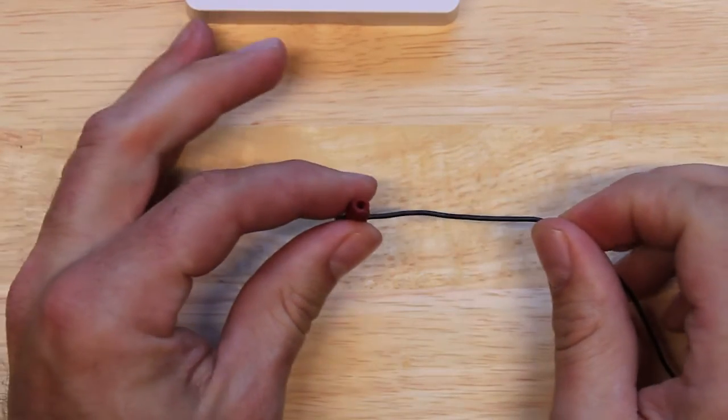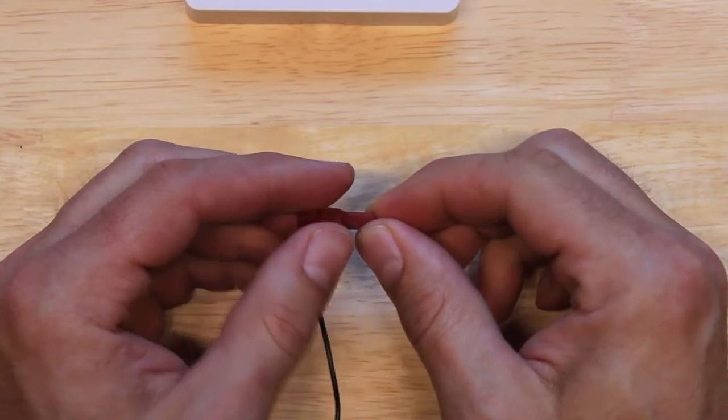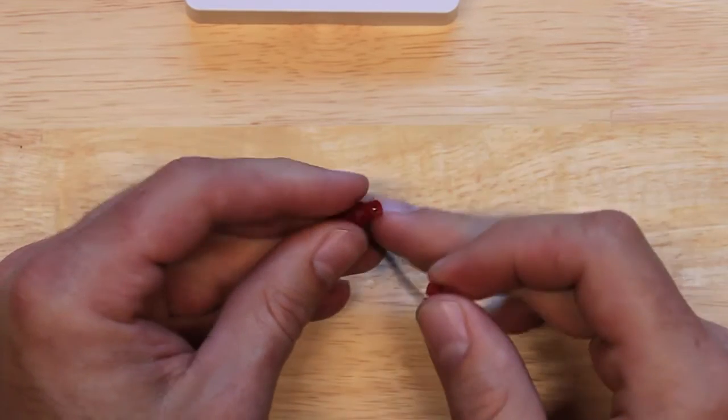Now if you wanted to you could solder this, but I like using these because they're kind of an insulator and keeps the wires and the reed sensor from touching anything inside the doorbell that might short it out.